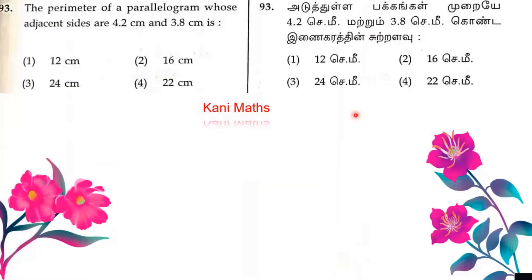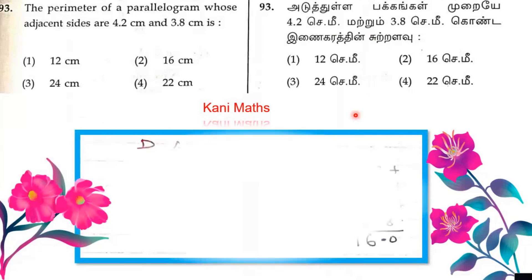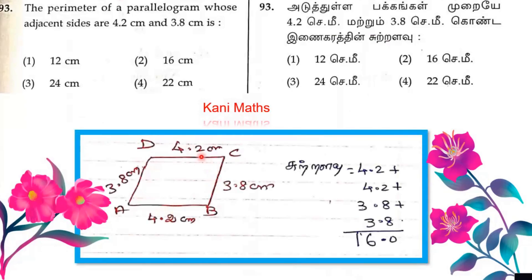Question number 93. The perimeter of the parallelogram whose adjacent sides are 4.2 cm and 3.8 cm. All we have to do is 4.2 plus 4.2 plus 3.8 plus 3.8, which is equal to 16. Option 2.